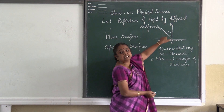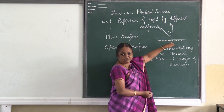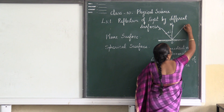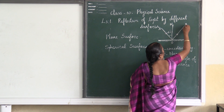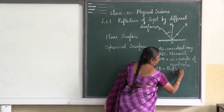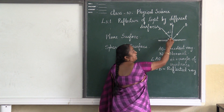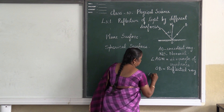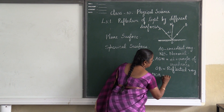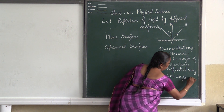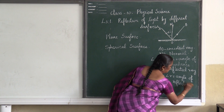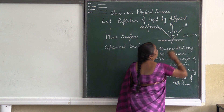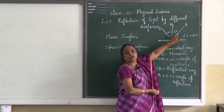Now what happens to this incident ray after touching this reflecting surface at the point of incidence — it will bounce back to its original medium. OB represents the reflected ray. The angle formed between NO and OB, that is between the normal and the reflected ray, is called the angle of reflection, denoted as angle R. What we should know is that angle I will be equal to angle R — the angle of incidence is equal to the angle of reflection.